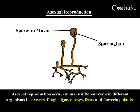Asexual reproduction occurs in many different ways in different organisms like yeast, fungi, algae, mosses, ferns, and flowering plants.